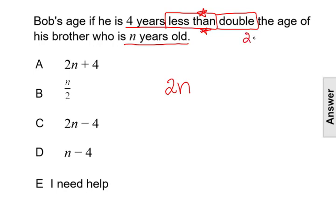So even though technically the double times n is after the four - the four is to the left of the 2n - we're actually going to switch the order and have 2n minus four.